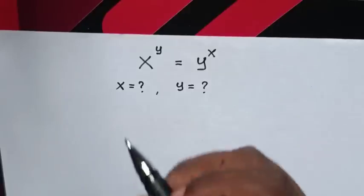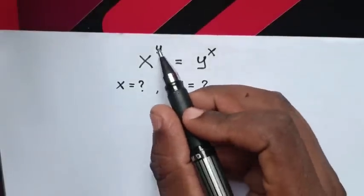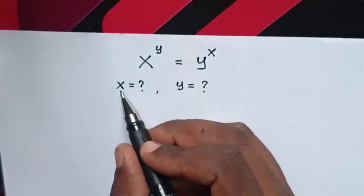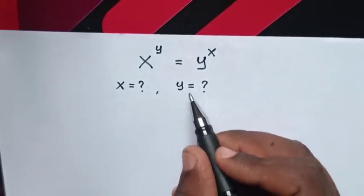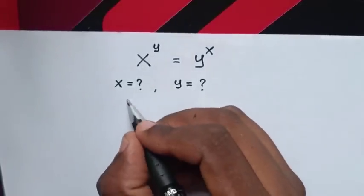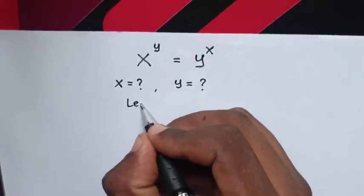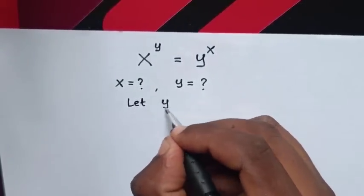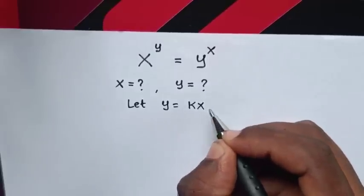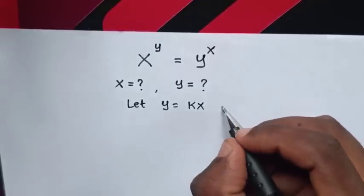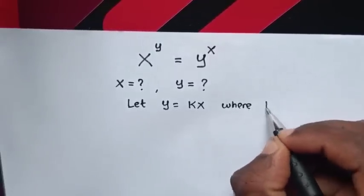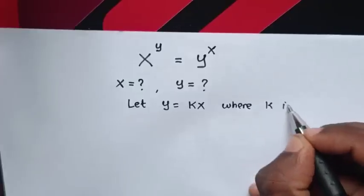How to solve x^y = y^x, to find the value of x and y. First, we let y = kx, where k is a constant.